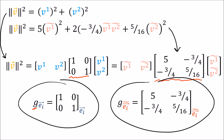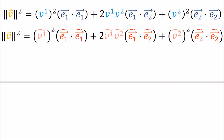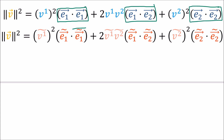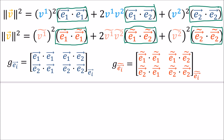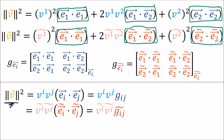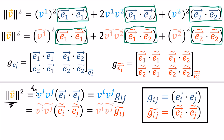Just like with vectors, metric tensors are invariant, but they look different and have different components when we use different coordinate systems. To get vector lengths, we really just need to know the basis vector dot products. We can store these dot products in a matrix which represents the metric tensor for that coordinate system. To get the squared vector length, we use the simple formulas involving the metric tensor components gij, with implied summations over i and j.